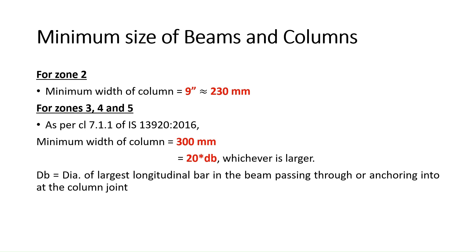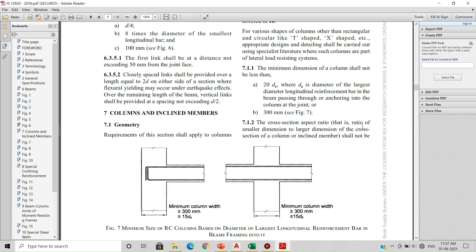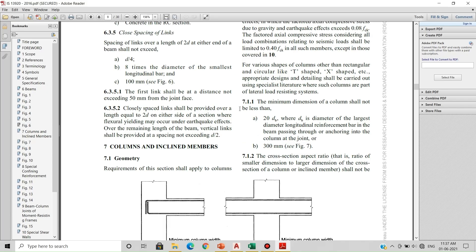Let me show you this clause in IS 13920. As per clause 7.1.1, the minimum dimension of a column shall not be less than 20 times dB, and it shall not be less than 300 mm. Here, dB means the diameter of the largest longitudinal reinforcement bar in the beam passing through or anchoring into the column joint.